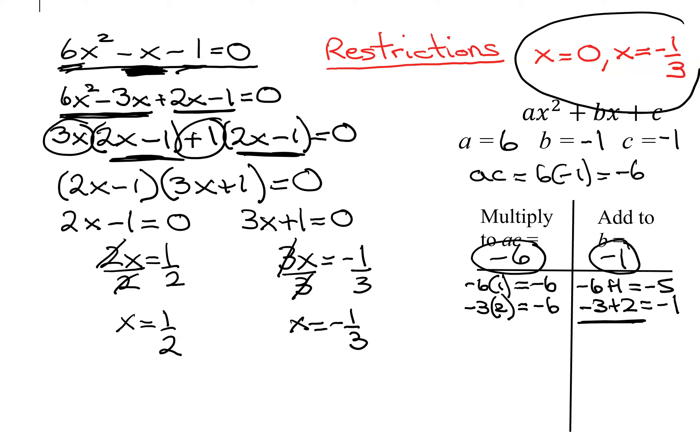Remember our restrictions. x equals negative 1 third would make one of our original denominators 0, so it is not a good solution. Is x equals 1 half allowed? It is not one of the restrictions. So this problem has one solution: x equals 1 half.